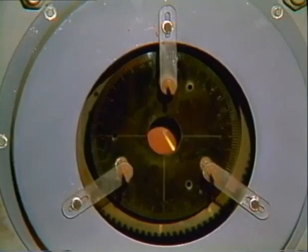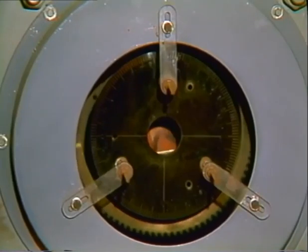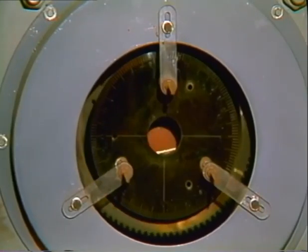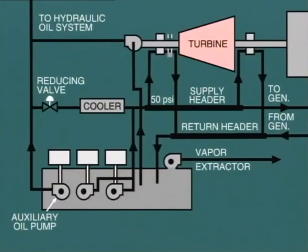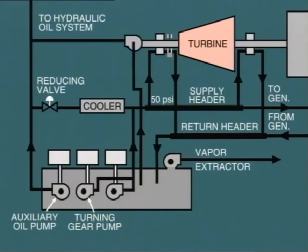When the turbine is out of service and operating on turning gear, we still need to provide lubrication to the bearings. However, in this situation, with hydraulic oil not required, it would be inefficient to run the large auxiliary oil pump. Instead, a small pump is installed, known as the turning gear oil pump, and this provides sufficient oil for lubrication only.